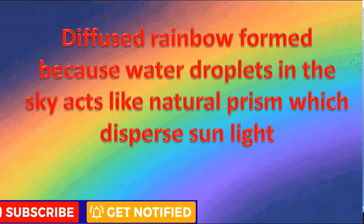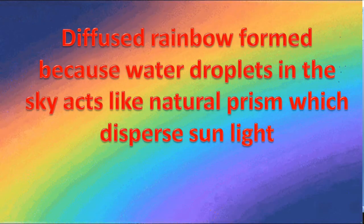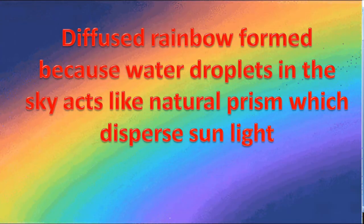Rainbow forms because water droplets in the sky act like a natural prism which disperses sunlight into seven colors.